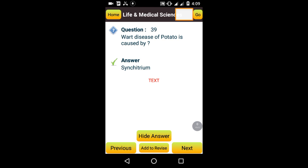What disease of potato is caused by bacteria? Which element is essential for the plant to help them in the formation of chlorophyll? Magnesium.